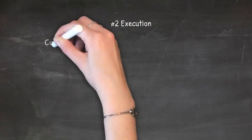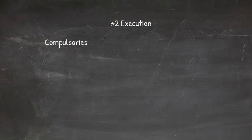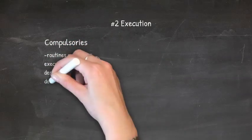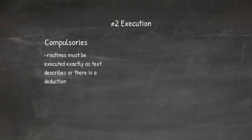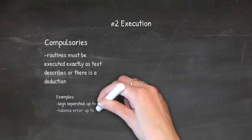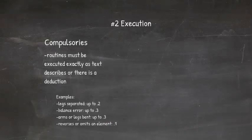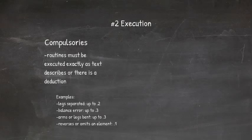The second thing judges look for is execution of skills. In compulsories, routines must be executed exactly as the text describes or a deduction is taken. It's very rare for there to be no deductions at all. For example, if a gymnast separates her legs when they should be together, that can be up to two tenths; a balance error can be up to three tenths; bent arms or legs when they should be straight can be up to three tenths; and reversing or omitting a part of the routine can be a tenth.